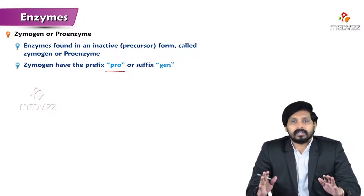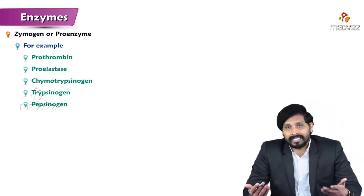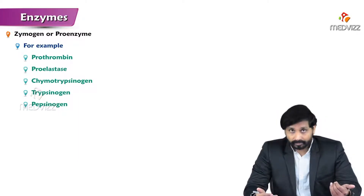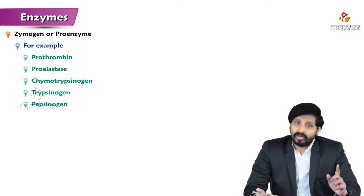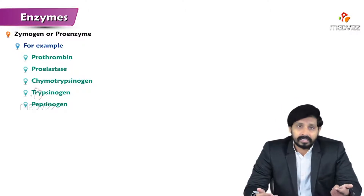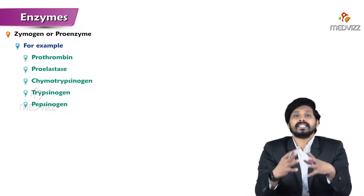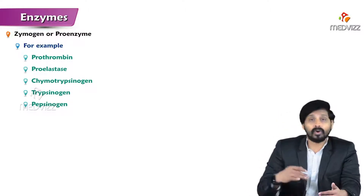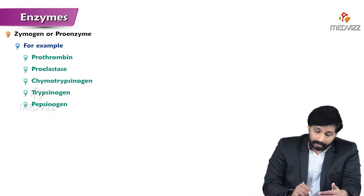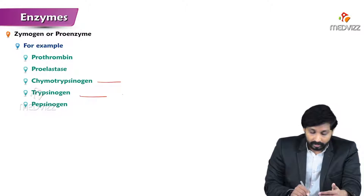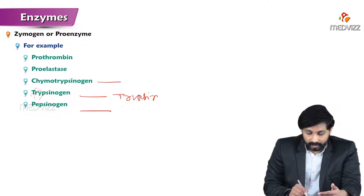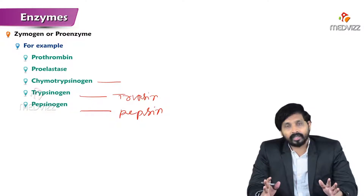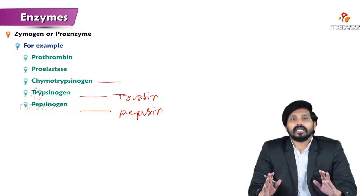Zymogen or proenzyme - both are inactive and require some corrections. For example, digestive proteolytic enzymes: pepsin in the stomach is initially synthesized as pepsinogen. Chymotrypsinogen is also an inactive form, with the active form being chymotrypsin. Similarly, prothrombin is converted to thrombin, pro-elastase to elastase, and pepsinogen to pepsin. Initially enzymes are synthesized as inactive forms, requiring editing so they can be converted to the active form.